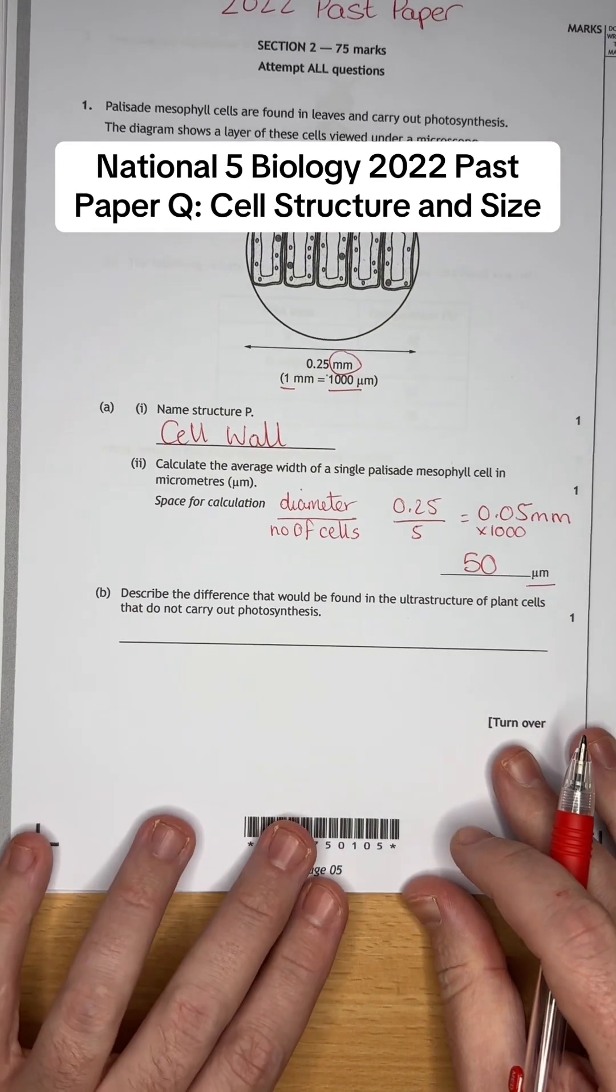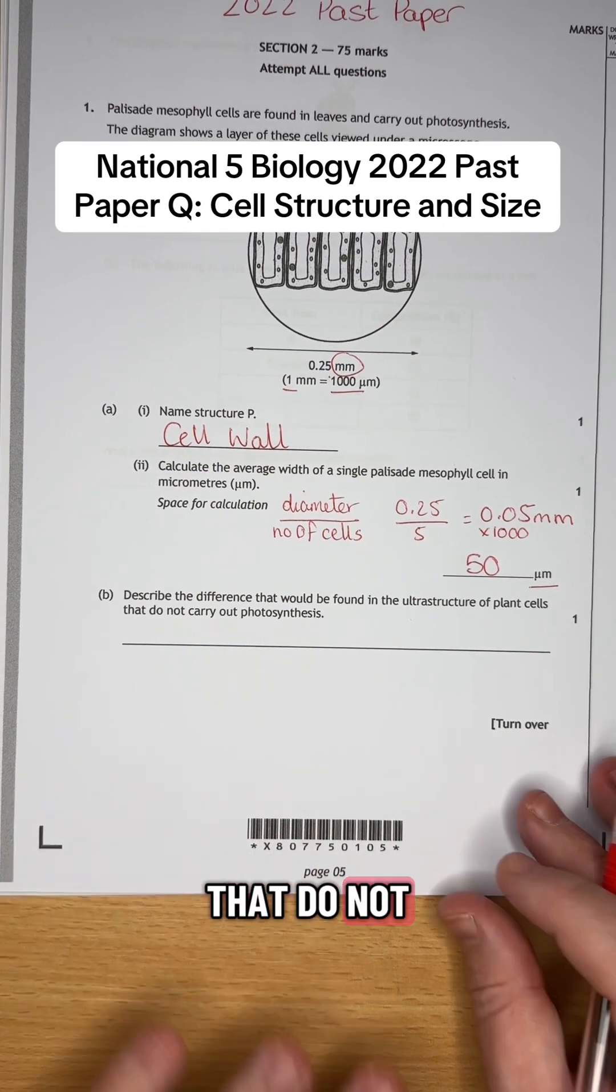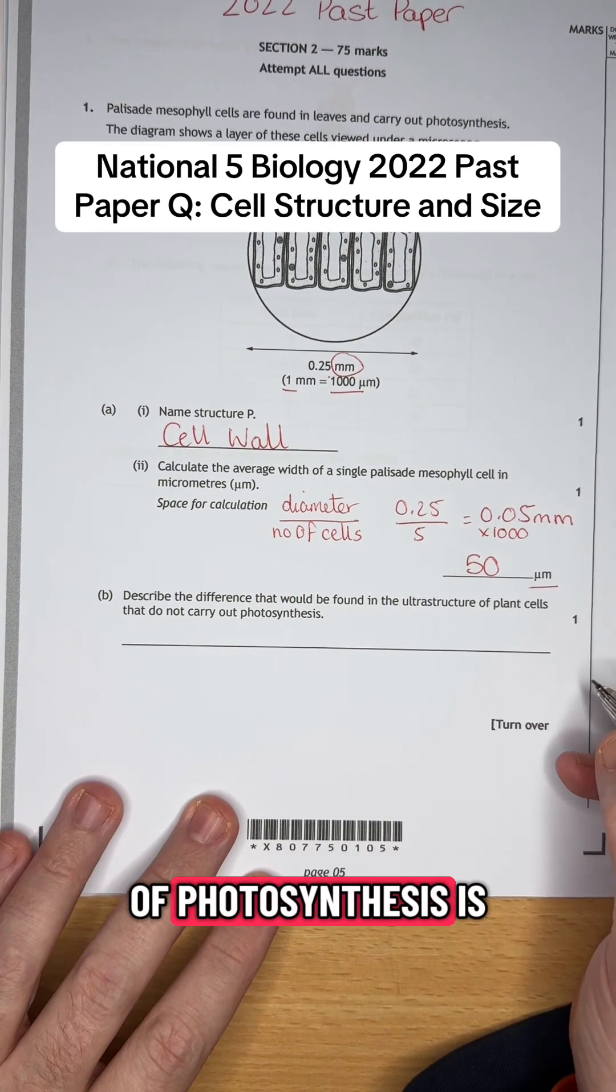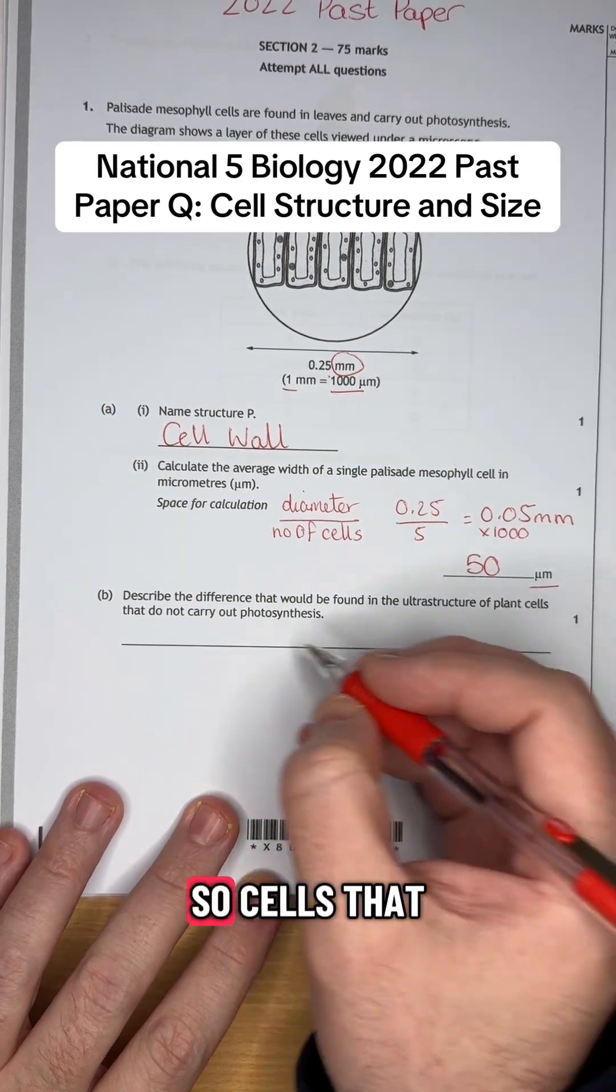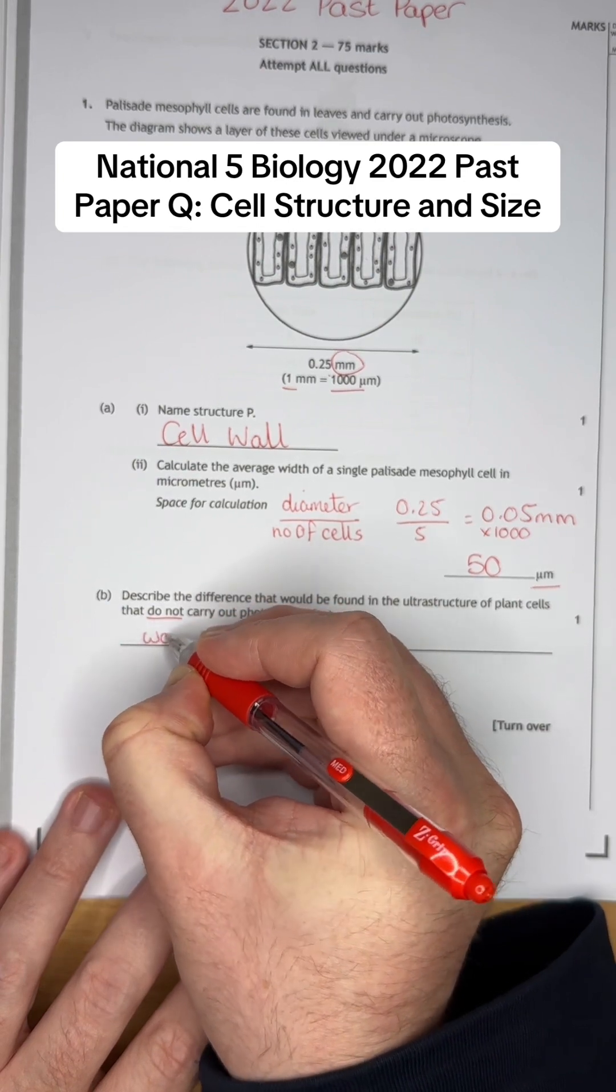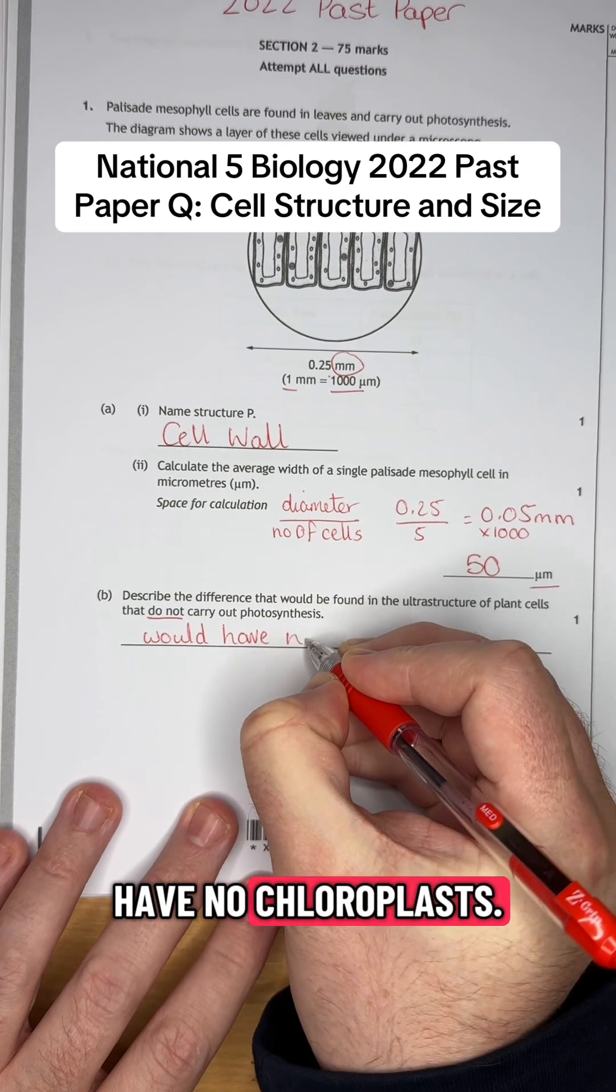Part B. Describe the difference that would be found in the ultrastructure of plant cells that do not carry out photosynthesis. So the site of photosynthesis is the chloroplasts. So cells that do not carry out photosynthesis would have no chloroplasts.